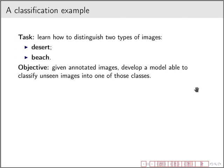Let us start by posing this motivation as an example. Let's say we have a task that requires us to learn how to distinguish between two types of images: images that are photographs taken from the desert and other ones that were took from a beach landscape. So the objective here is, given annotated images, develop a model that is able to classify unseen images, I mean images that only the computer will see, not a human, into one of those classes.